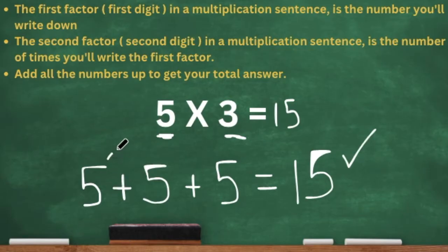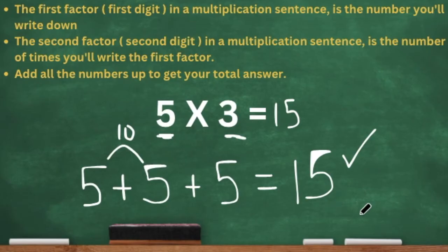Or if you don't want to skip count, you can just add: five plus five is ten, then add that last five onto the ten. So ten plus five is 15. And that's it, that is all.